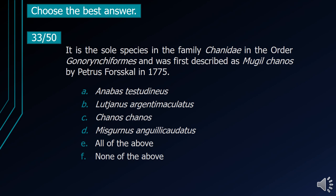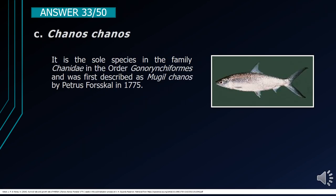Number 33. It is the sole species in the family Chanidae in the order Gonorynchiformes and was first described as Mugil chanos by Petrus Forsskål in 1775. A. Anabas testudineus. B. Lutjanus argentimaculatus. C. Chanos chanos. D. Misgurnus anguillicaudatus. E. All of the above. F. None of the above. The correct answer is letter C, Chanos chanos. It is the sole species in the family Chanidae and was first described as Mugil chanos by Petrus Forsskål in 1775.